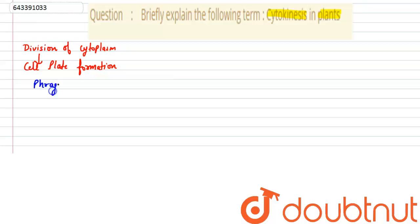These phragmoplast, these are the array of microtubules, these are the array of microtubules. They along with the golgi vesicles and actin filaments,